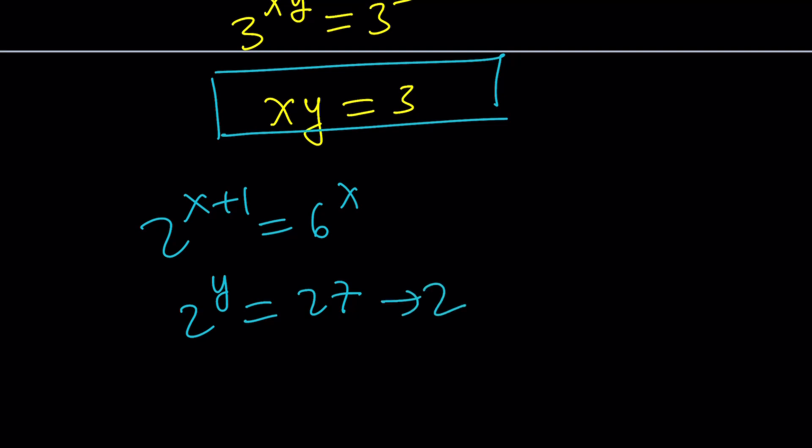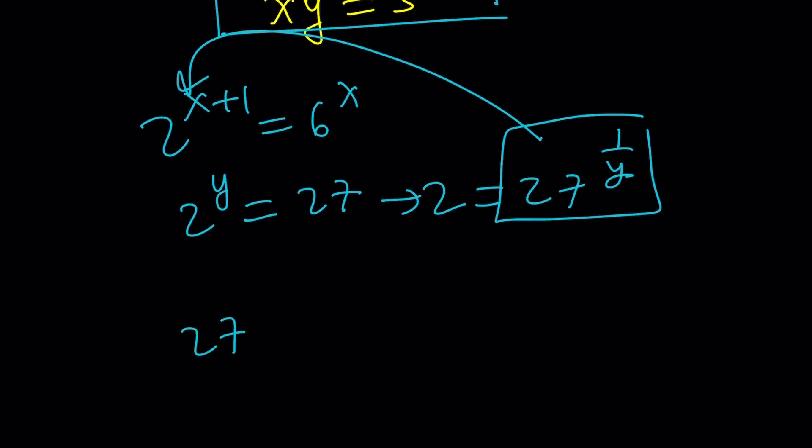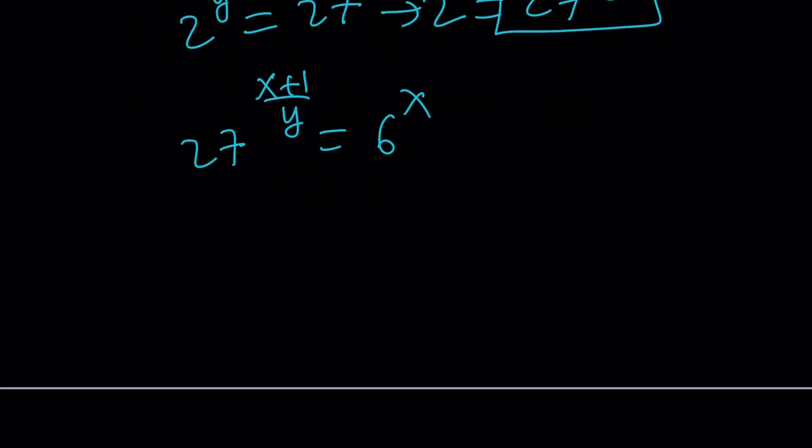I can isolate the 2 from here and write it as 27 to the power 1 over y, and just replace that 2 with this. But you're going to have 27 to the power x plus 1 over y equals 6 to the x. Now, do you think we're going to be able to find x, y from here? So something to explore, definitely, but let's go ahead and do the following. We can write this as 3 to the third power, and that will be multiplied by x plus 1. So it's going to be 3 to the power 3x plus 3 over y equals 6 to the power x.